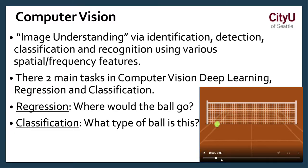As you can see here, this is also trying to know that this moving object is, let's say, a tennis ball. There's two main tasks in computer vision, like deep learning, regression and classification. Regression would ask where would the ball go, what would be the end result. Classification would maybe ask what type of ball this is.